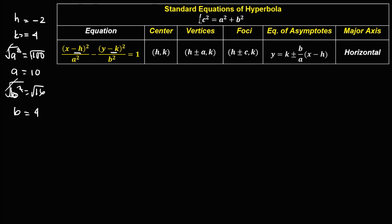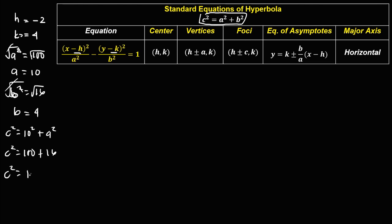To solve for c, use the formula c squared equals a squared plus b squared. So c squared equals 10 squared plus 4 squared, which equals 100 plus 16 equals 116. Therefore c equals the square root of 116.